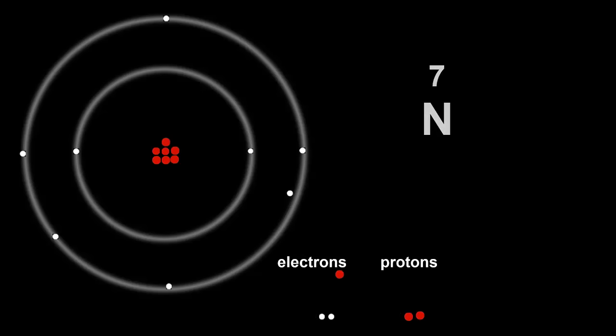Number eight, oxygen. Eight protons and eight electrons. Electron configuration, two, six. Two electrons in the first shell, and six in the second shell.